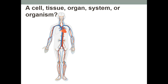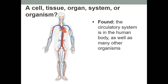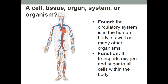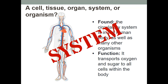Here we have the circulatory system in the human body — a heart, blood vessels, veins, and blood. Is this a cell, a tissue, an organ, an organ system, or an organism? Its function is to transport oxygen and sugar to the cells within the body. It's a system, or you can say an organ system. Hopefully you got that one right.